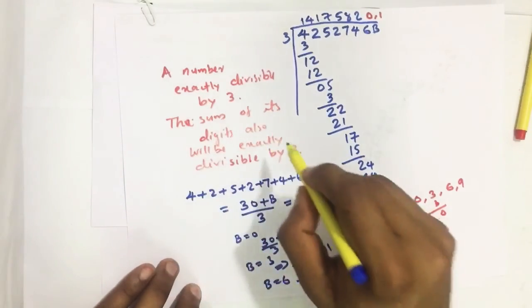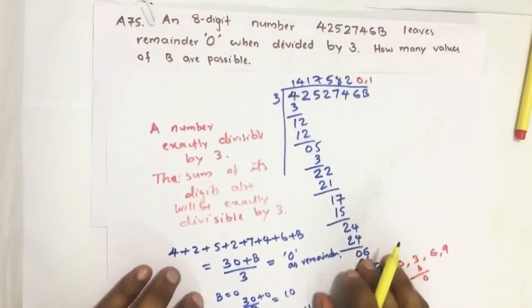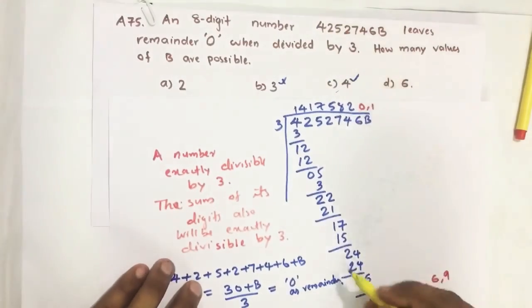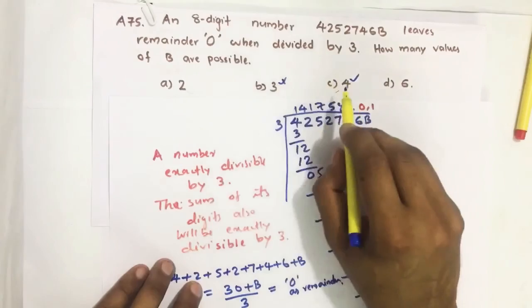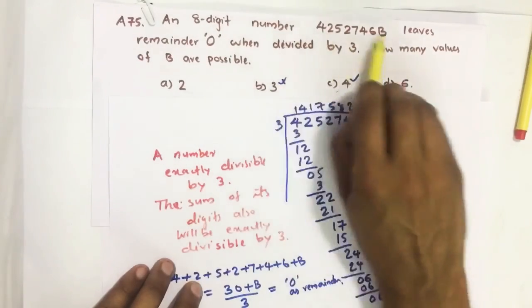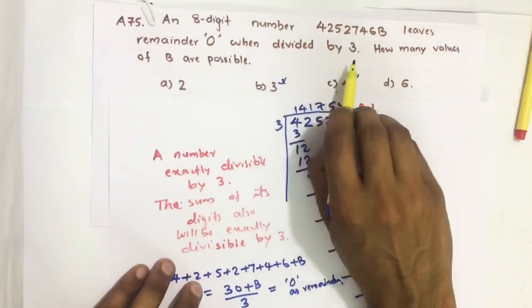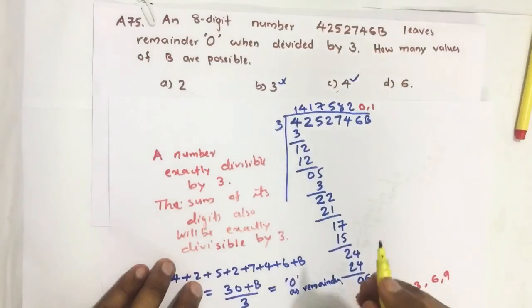So if you know this trick, you can do it like this also. Our answer is there are 4 such values which give this 8-digit number, when divided by 3, remainder 0. If you have any suggestions, please do comment.